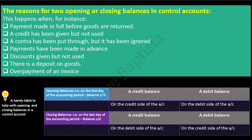Given below is a handy table to help with opening and closing balances in a control account. Opening balances are made on the first day of the accounting period, or a balance brought down. If it is a credit balance, it will be entered on the credit side of the control account. If it is a debit balance, it will be entered on the debit side of the control account. And a closing debit balance will be entered on the credit side of the control account.